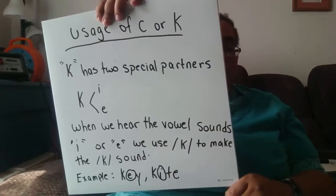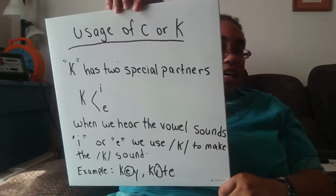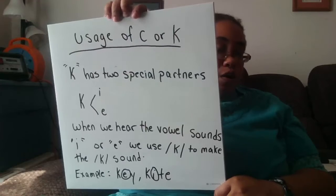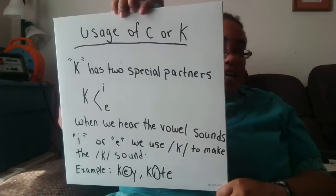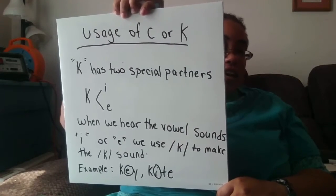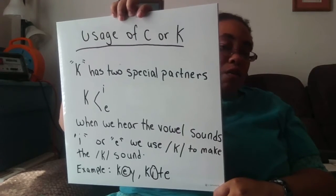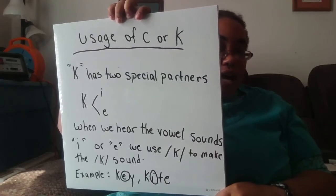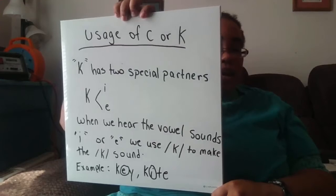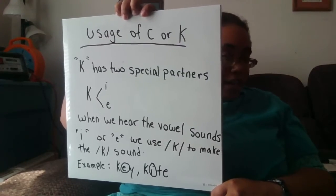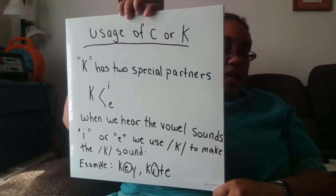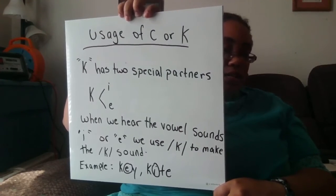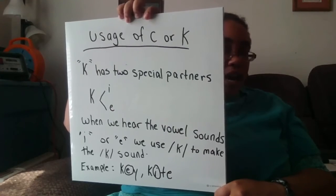The second letter we can use to make the 'kuh' sound is the letter K. K has two special partners or friends: KI and KE. When we hear the vowel sound I or E, we use K to make the 'kuh' sound. Let's look at some words. Key — K, E, Y. See how the E is circled? It's a partner with K. Key.